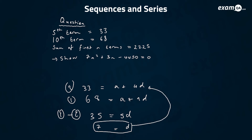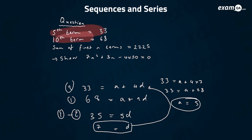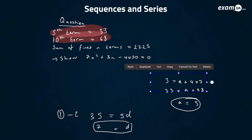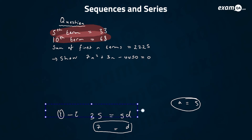If I plug the value of d into the first equation, I get 33 equals a plus 4 times 7, so 33 equals a plus 28, so a equals 5. From the first two equations, we managed to work out that a equals 5 and d equals 7.